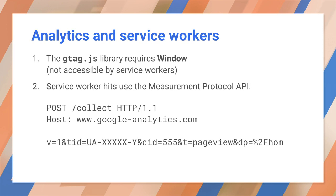The alternative is to use the measurement protocol API — a set of standard HTTP calls, such as you would make with fetch. This is a simple set of HTTP parameters documented at the Google Analytics site.